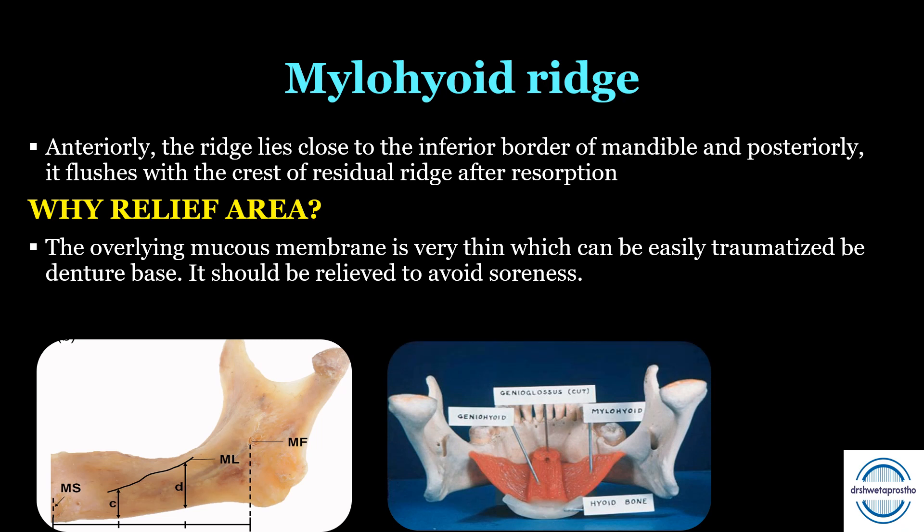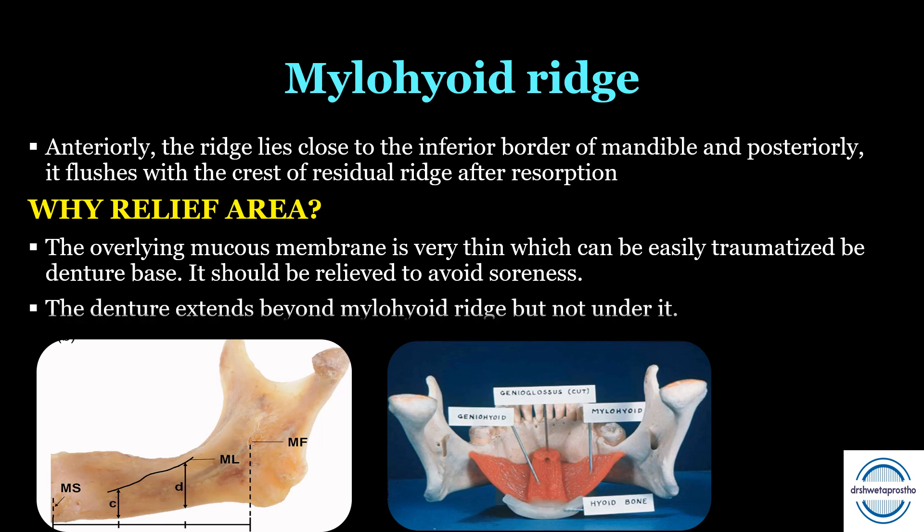The mylohyoid muscle is attached to this mylohyoid ridge and forms the floor of the mouth. The denture extends beyond the mylohyoid ridge, but it should not go under it.